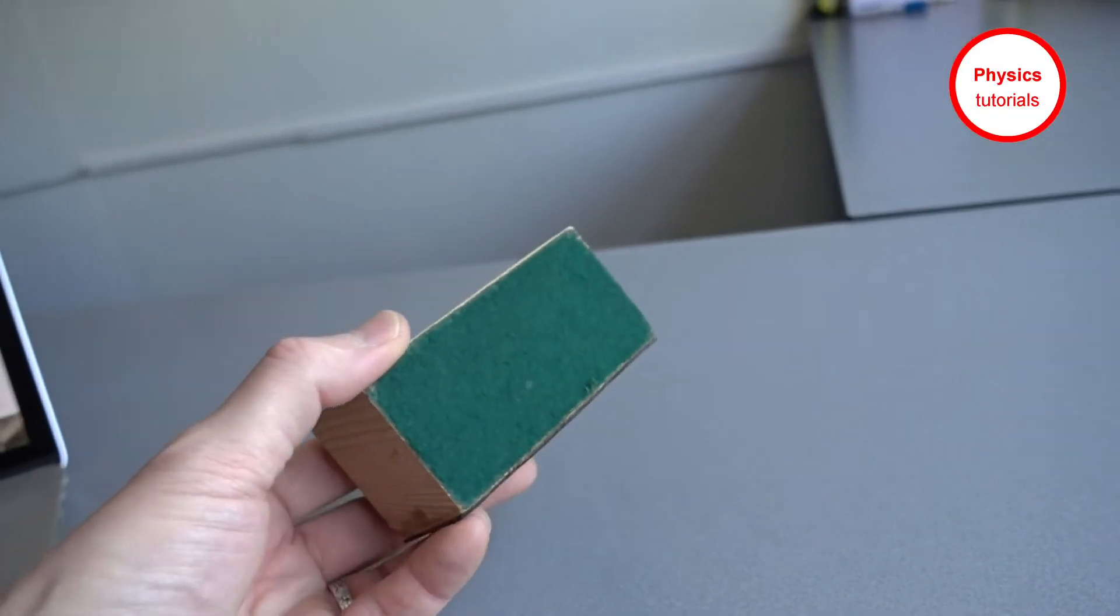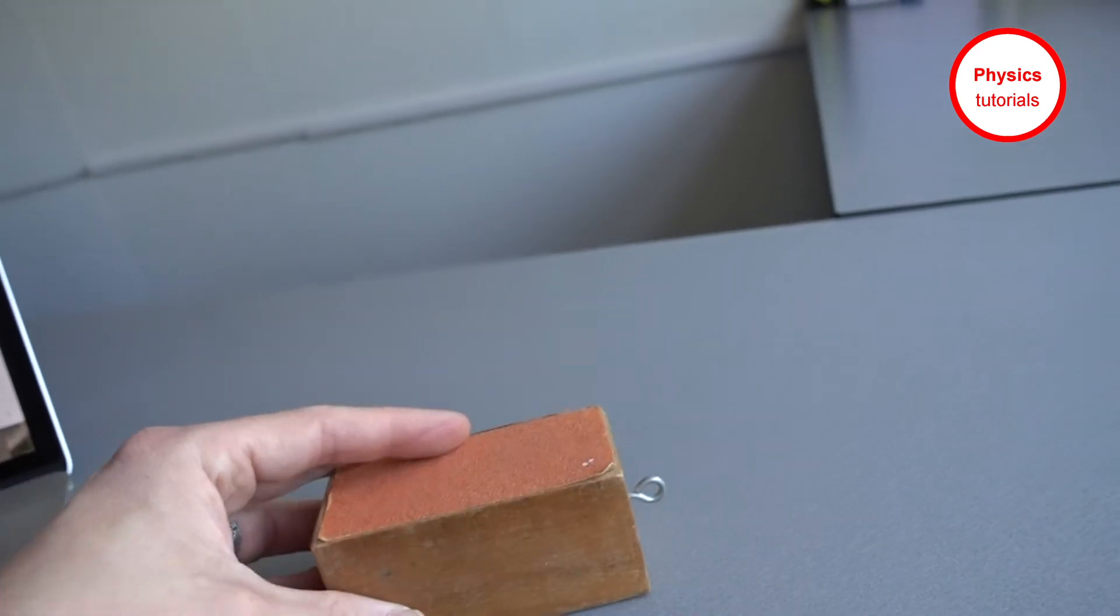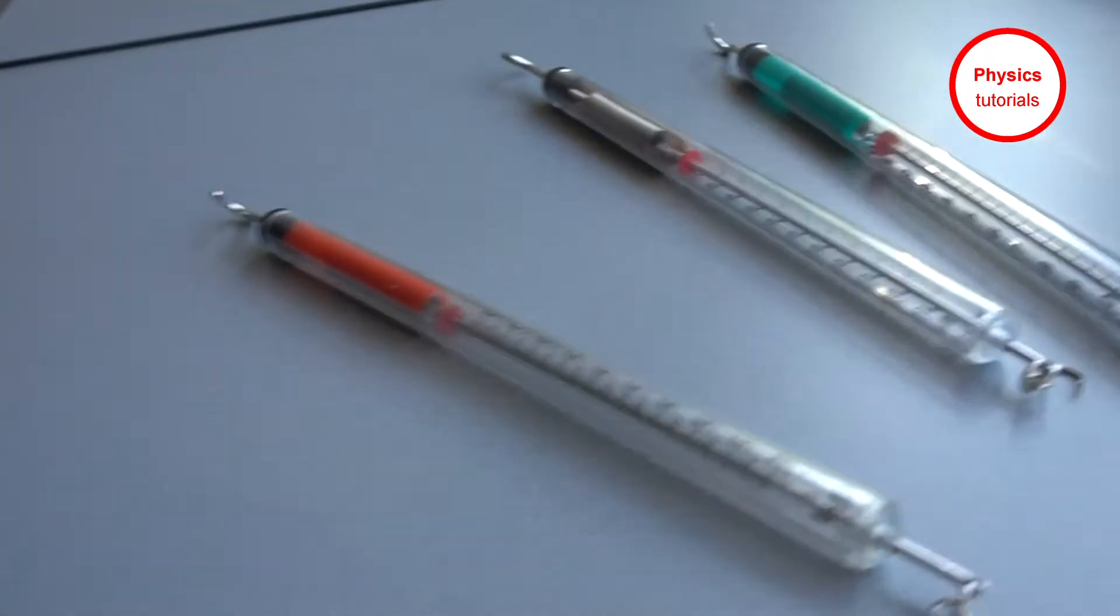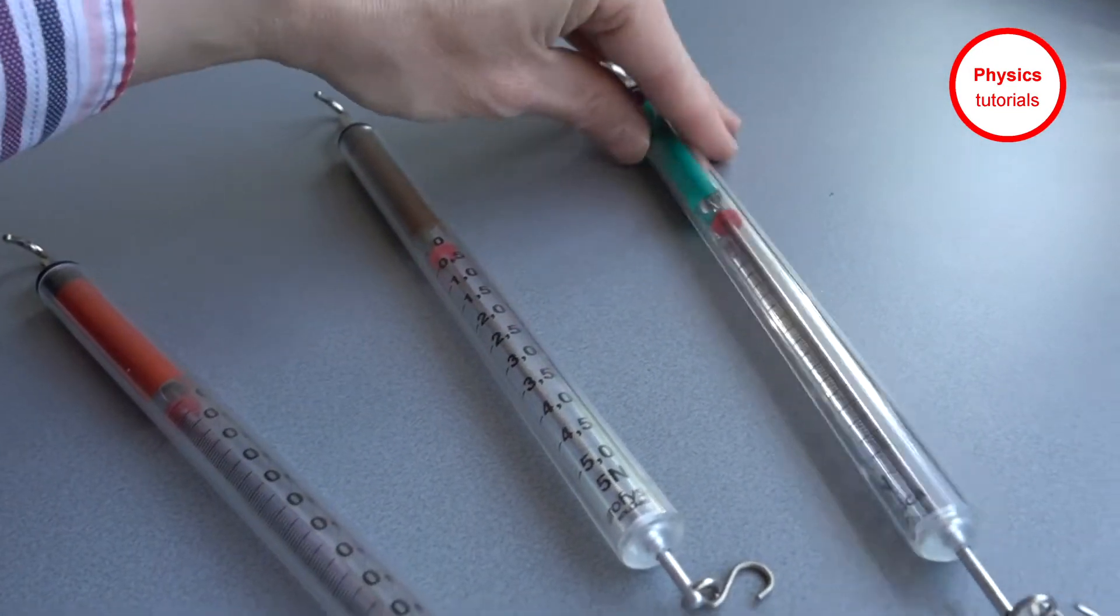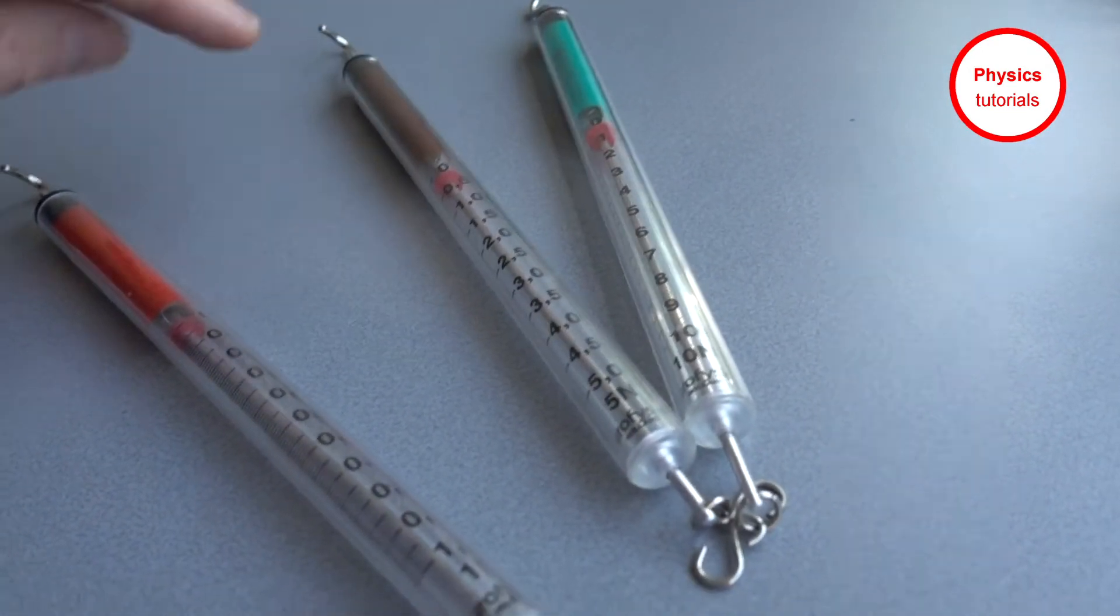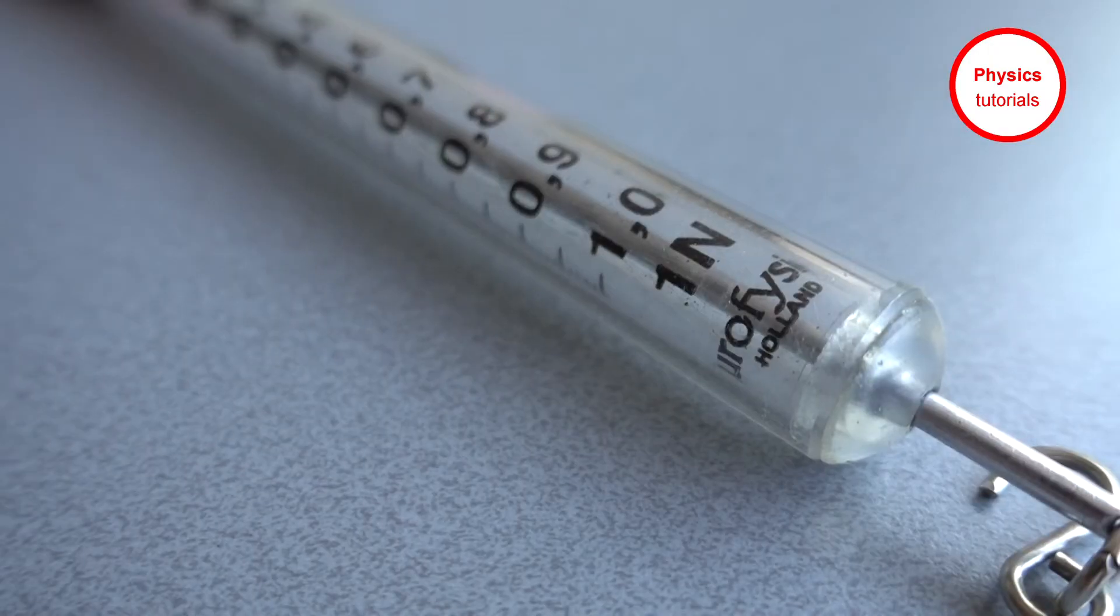Let's see what kind of friction force we measure when we slide this block on the different sides on the table and for that we're going to use a spring balance. As you know, we have spring balances with different ranges but we are going to use the spring balance with a range up to one newton.